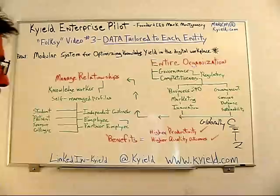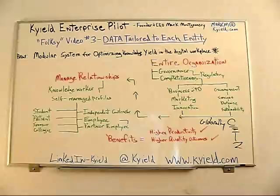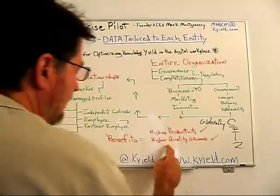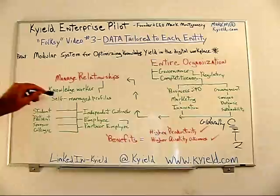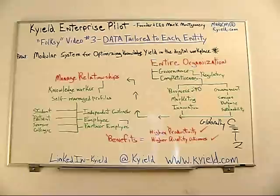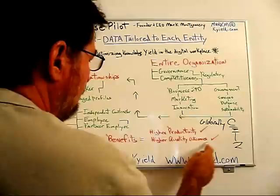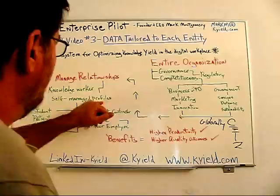As the knowledge worker's work becomes populated in the system, the whole system and organization becomes smarter. The primary benefit for knowledge workers is much higher productivity. When you have the ability to manage the quality and quantity of your data consumption based on priorities, that really optimizes productivity and delivers higher quality outcomes.